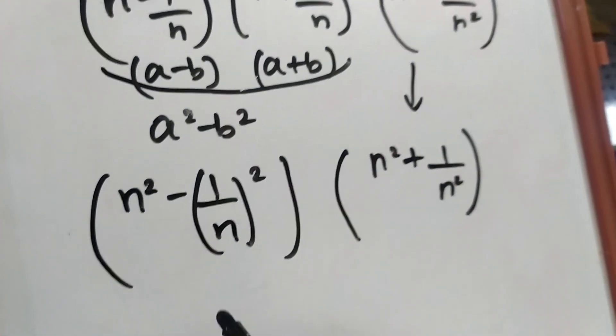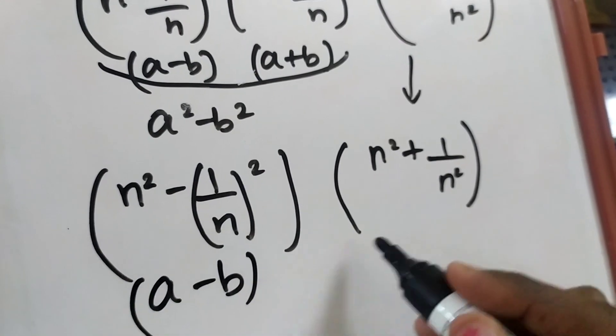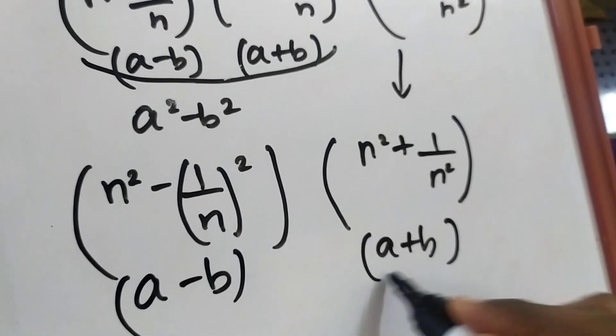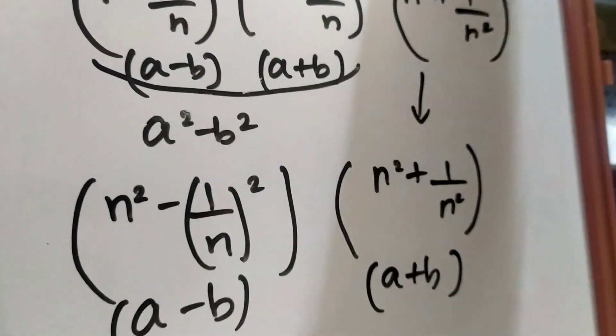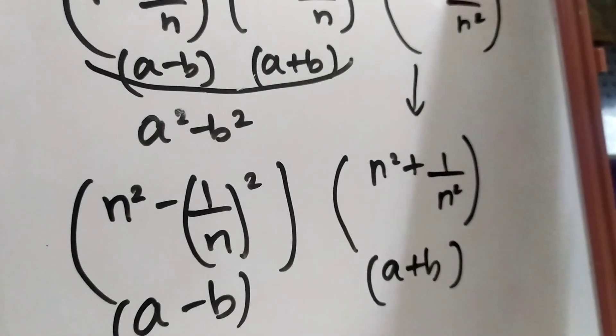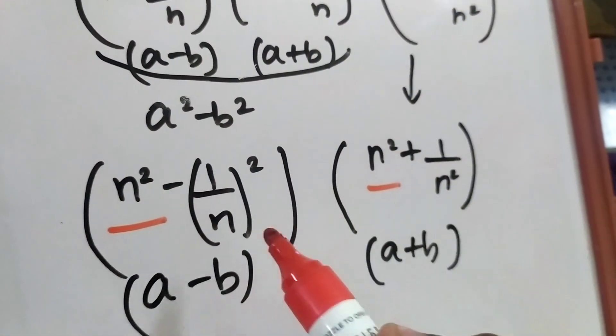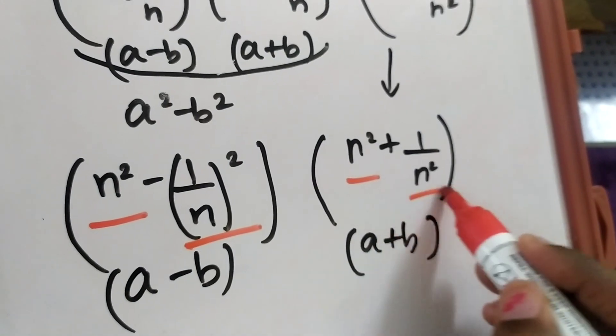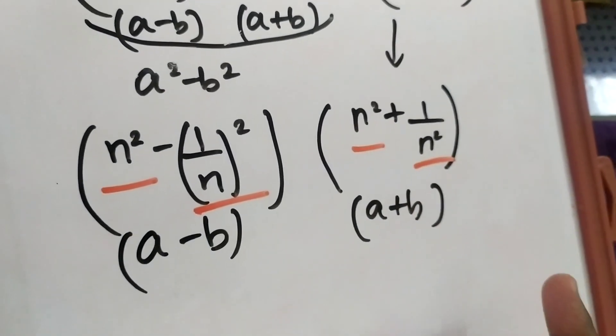So again see this. This is a minus b and this is in the format of a plus b. Because here also you are having n square, here also you are having n square, here also you are having 1 by n square, here also you are having 1 by n square.